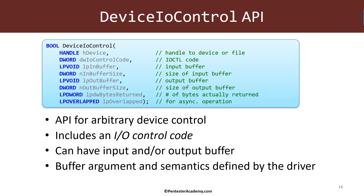The control code allows the driver to support several types of operations. For example, Process Explorer can support an operation for closing a handle represented by one control code, and another operation for obtaining the kernel stack of a thread represented by a different control code — a very flexible mechanism. With the control code, you can provide one or two buffers designated as input and output. Extra information goes in the input buffer, and any result is retrieved from the output buffer. The protocol between the driver and its client should be documented, perhaps via a header file and standard documentation.